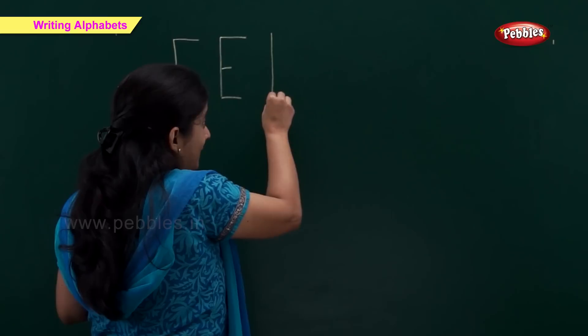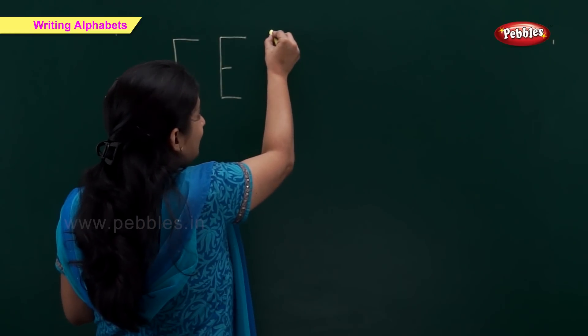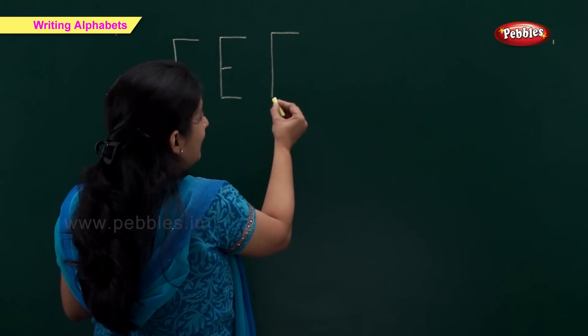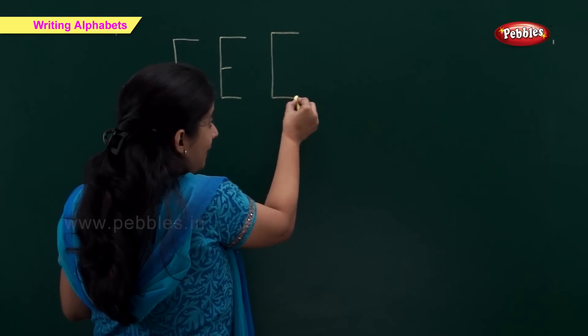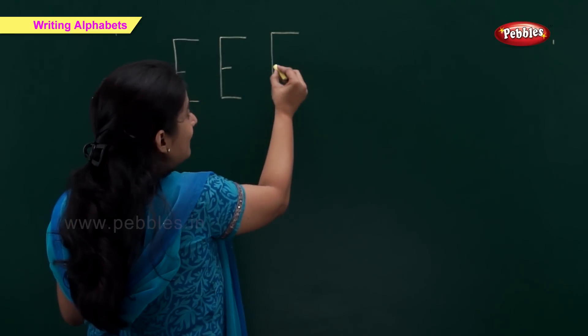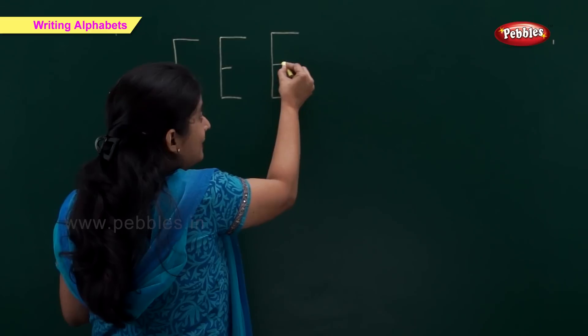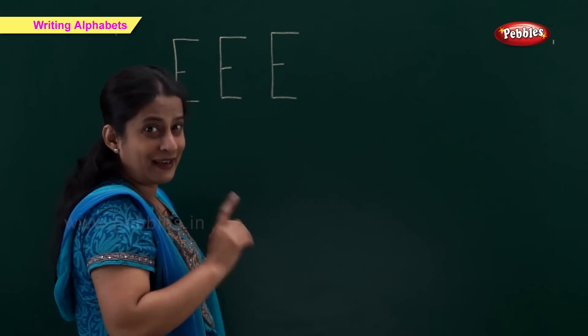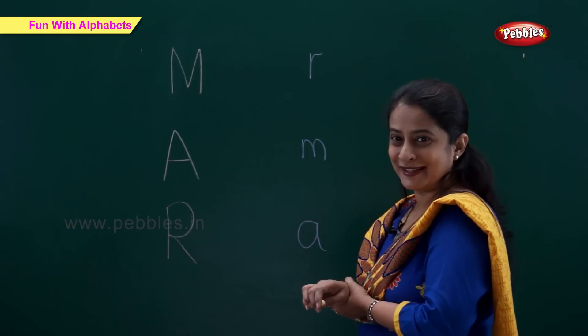One standing line. One sleeping line. Another sleeping line. And a small sleeping line makes alphabet E. What is this?